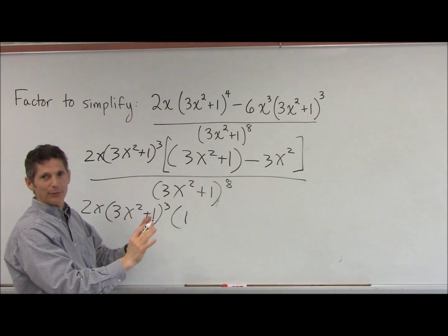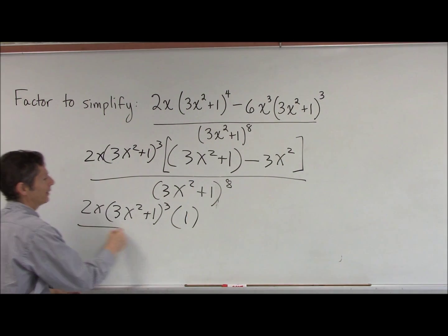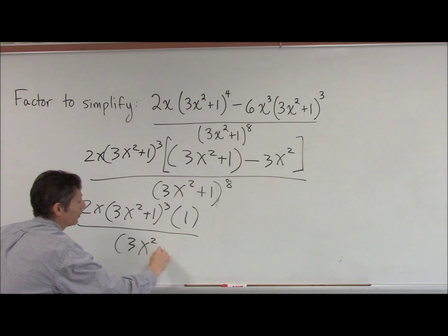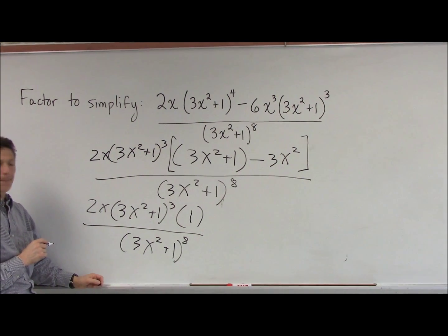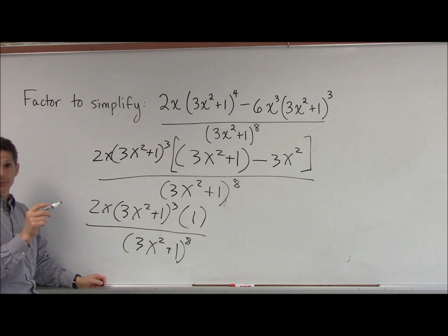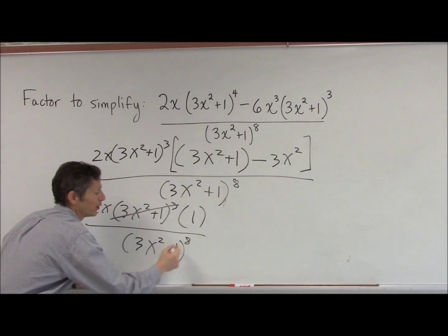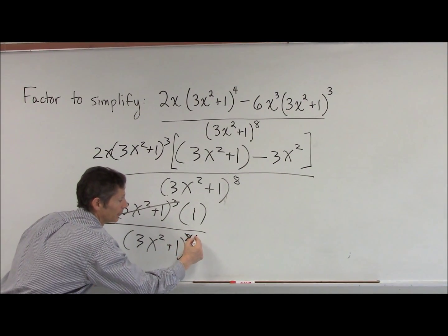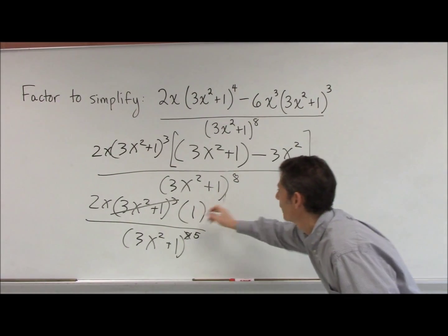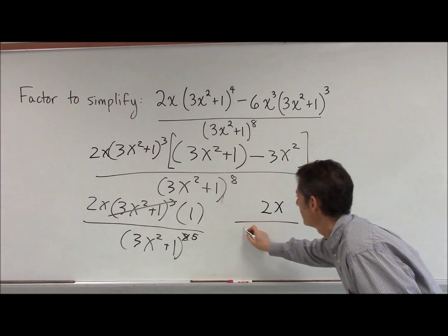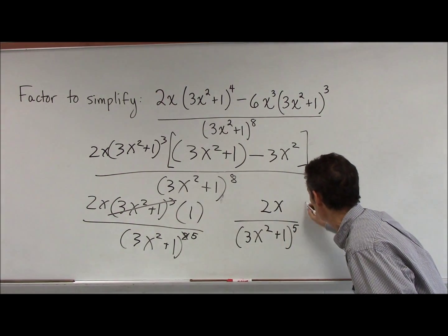I'm just going to write that for the moment, just so you realize that that 1 is 0. I have a 3x squared plus 1 to the eighth. So I have one term in the numerator and one term in the denominator. So I can start dividing. I can divide three of these guys away. Divide three from the bottom. I'm left with five. Does that work? And I'll just write it over here. I have 2x times 1, which is, of course, just 2x. And downstairs, I have 3x squared plus 1 to the fifth. And I think I'm done.